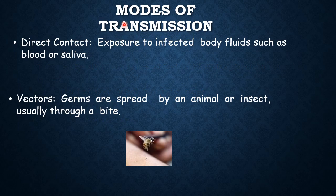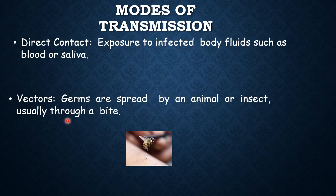So children, let's study the modes of transmission — how a communicable disease gets transferred from an infected person to a healthy person. There are certain agents or ways by which transmission takes place. The first one is through direct contact. If any healthy person comes in contact with an infected person regarding their blood or saliva, the healthy person can get infected. The second one is through vectors. Vectors are agents or carriers which carry germs from the infected person to the healthy person, and these vectors are mostly an animal or an insect, transferred usually through their bites.